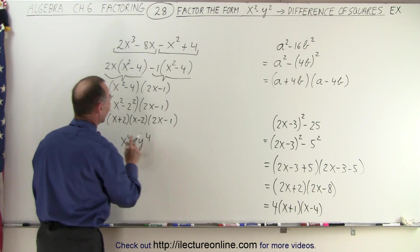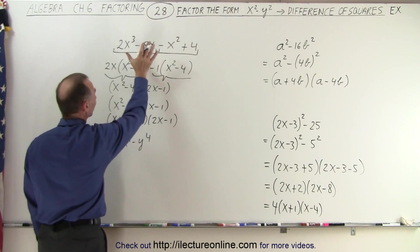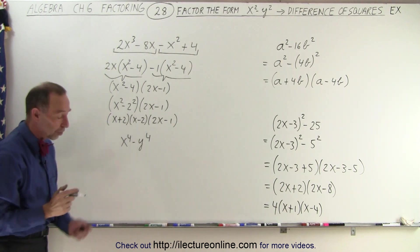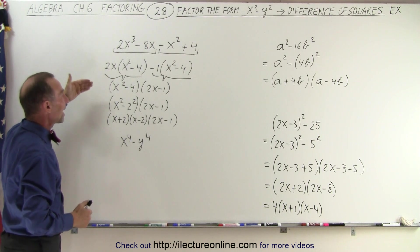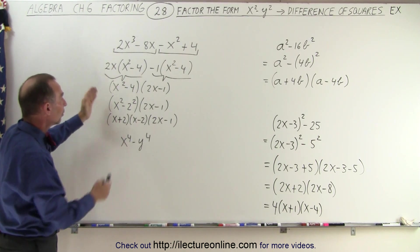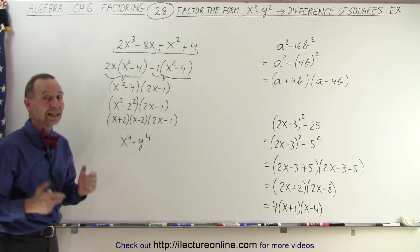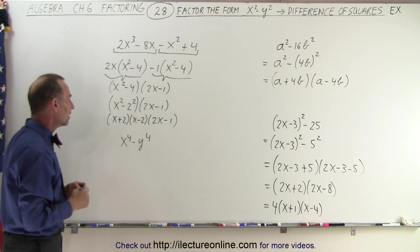So this is 2x minus 1 and so this is the final factored form of our original problem. So even though it may not look like it's a difference of squares, when you start factoring it by grouping and so forth, you may end up with a portion of it that is actually the difference of squares and then you use the technique.